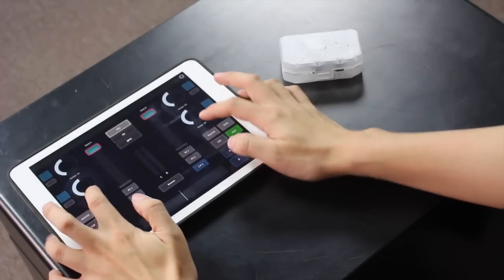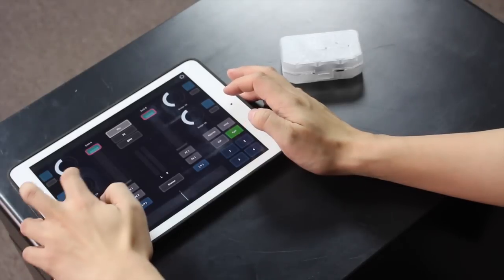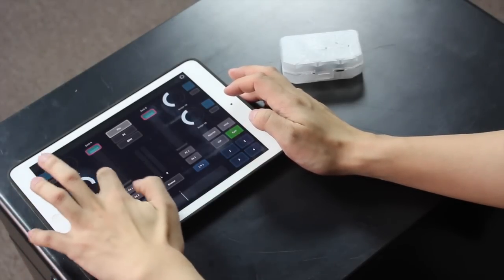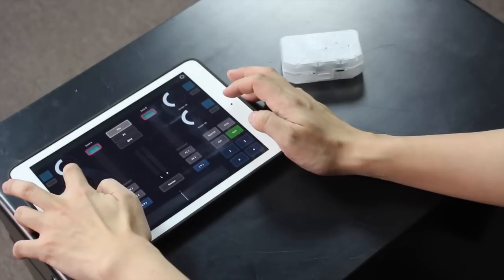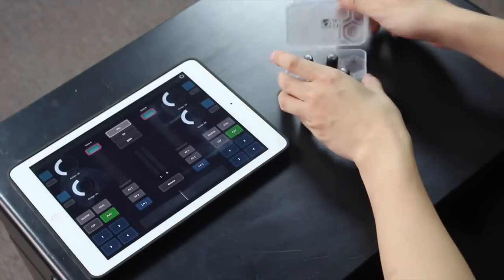So over here at Assign 2, these are my rotaries that have control over Traktor's filter. As you can see, it's moving. I'm using my finger. So let's see how it works with a Tuna knob.